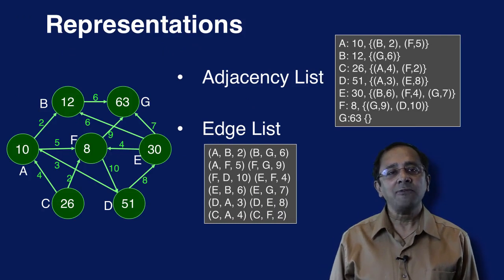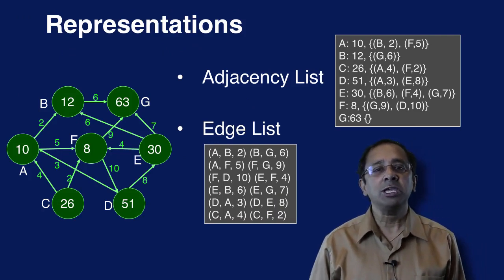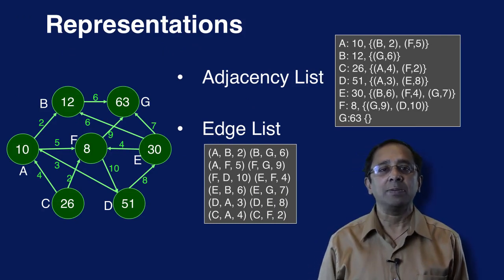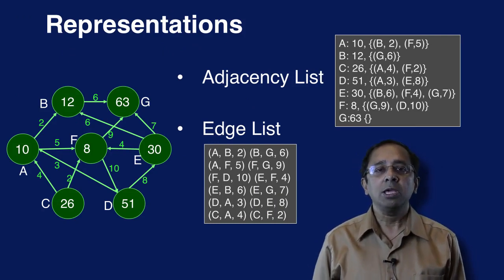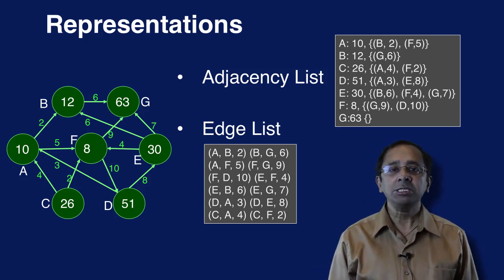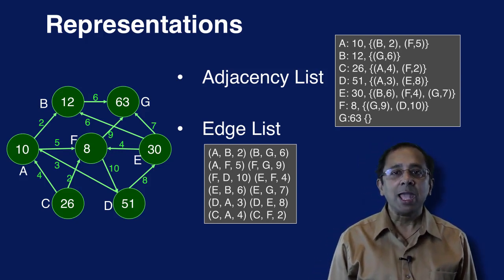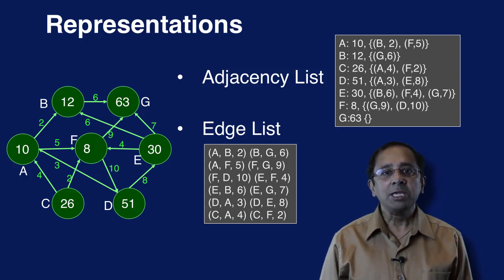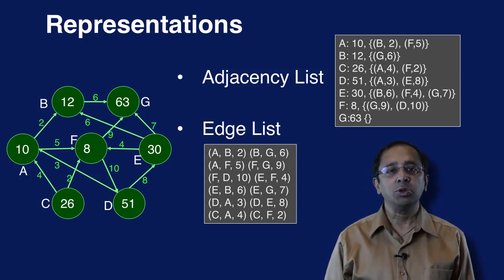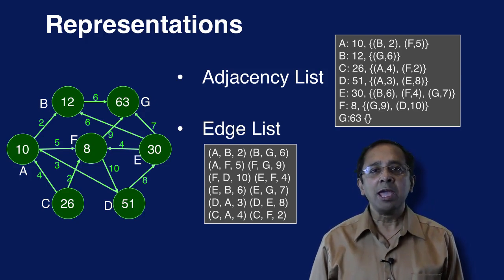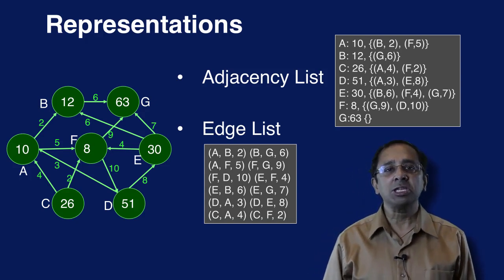A graph can be written in many ways. For Neo4j, we saw how graphs can be imported to the database from a CSV file. In Giraph, two of the most common input formats are adjacency lists and edge lists. For an adjacency list, each line has the node ID, a node value — which is a single number here — and a list of destination weight pairs.